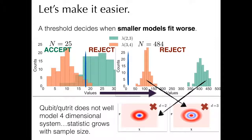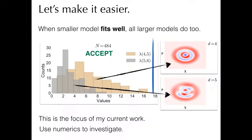What happens once we go past the d equals 4 model? When a smaller model fits well, every larger model will also fit well. Looking at histograms comparing 4 to 5 and 5 to 6, both are below the threshold. The algorithm tells us that when we find a dimension for which comparing it to the next larger model falls below the threshold, we stop. We look at those results, they're below the threshold, and we pick d equals 4. I've ended this slide by observing that what I'm doing now is actually trying to figure out analytically what these thresholds are supposed to be, guided by a little bit of numerics. Thank you.